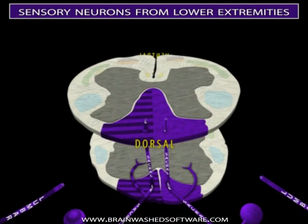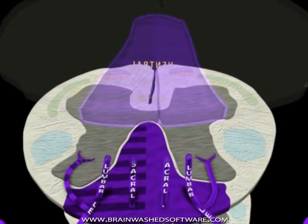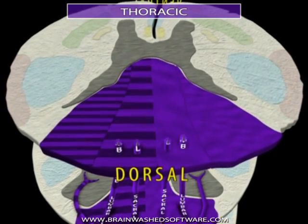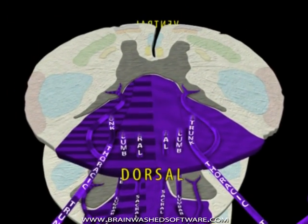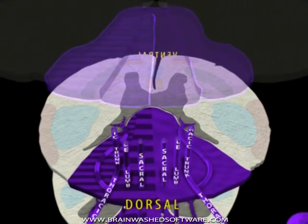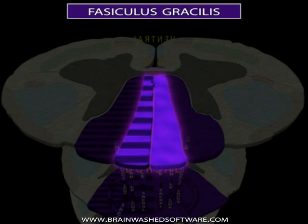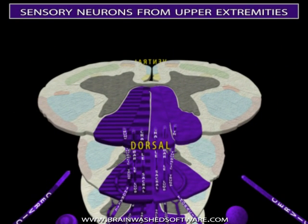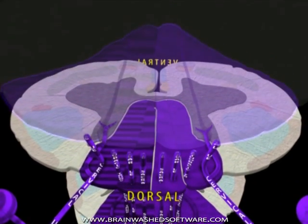Sensory neuron axons at lumbar levels behave in an identical manner, giving off collaterals and ascending in the fasciculus gracilis. Axons from the trunk enter thoracic spinal cord segments and ascend in the dorsal columns laterally to axons from the sacral and lumbar segments. Sensory neurons that innervate the upper extremities and neck enter the cord at the cervical levels. Along with neurons carrying information from the upper trunk, these axons form the most lateral section of the dorsal columns, the fasciculus cuneatus.